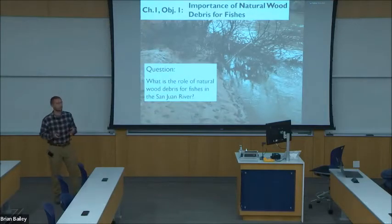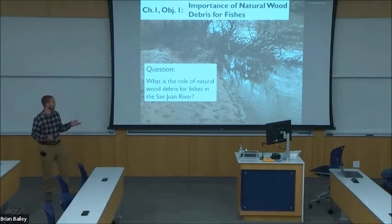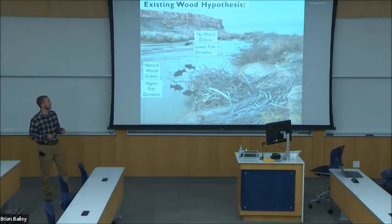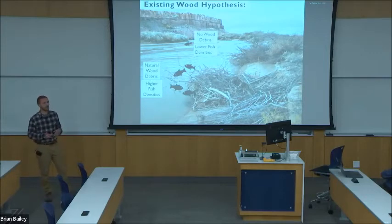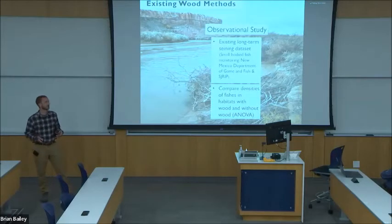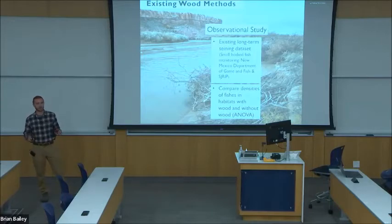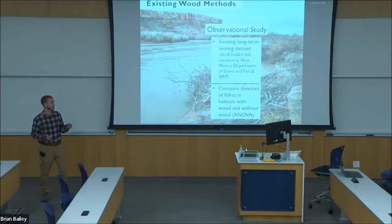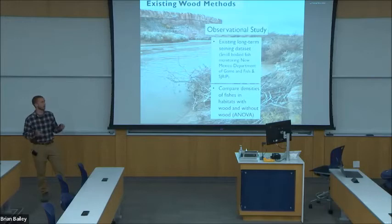The first objective of my first chapter will explore the question: what is the role of natural wood for native fishes in the San Juan River? My hypothesis is that fish densities will be higher near natural wood debris than in habitats away from natural wood debris. To answer this question, I will implement an observational study utilizing an existing long-term seining dataset collected by the New Mexico Department of Game Fish. I will use this dataset to compare densities of fishes in habitats with wood compared to habitats without wood.